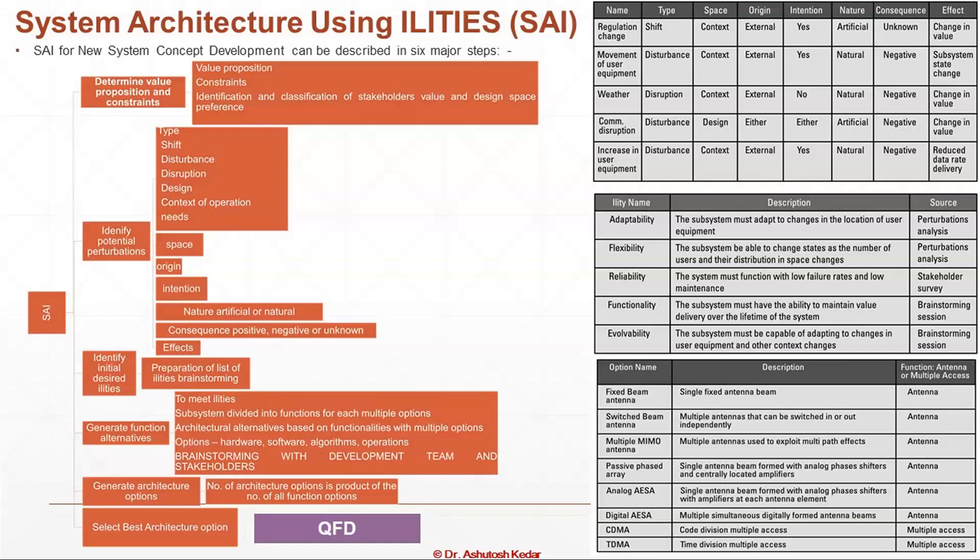We identify initial desired illities by preparing a list and doing brainstorming. Based on that, we generate functional alternatives to meet the illities, divide subsystems into functions for multiple options, and create architectural alternatives. We generate options for hardware, software, algorithms, and operations through brainstorming with the development team and stakeholders. We develop a number of architecture options and select the best, then develop a QFD matrix for the analysis.